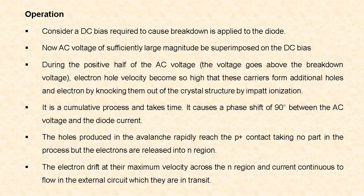Now let us see the operation of the IMPATT diode. Initially, a DC bias required to cause breakdown is applied to the diode. Then an AC voltage of sufficiently large magnitude is superimposed on the DC bias. During the positive half cycle of the AC voltage, that is when the voltage goes above the breakdown voltage, the electron-hole velocity becomes so high that these carriers form additional holes and electrons by knocking them out of the crystal structure by impact ionization.